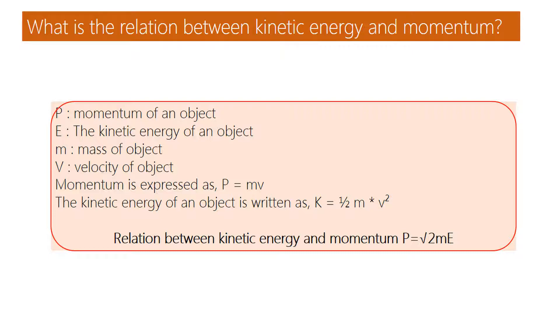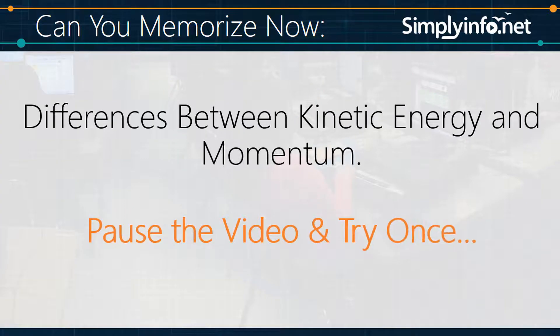The relation between kinetic energy and momentum: Kinetic energy is written as KE equals half into m into v squared. The relation is p equals square root of 2 into m into E.